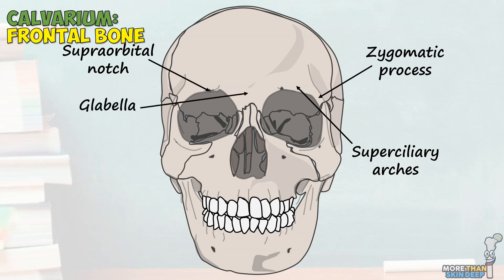This part of the frontal bone is known as the glabella, and the part where it joins the nasal bones is the nasion. The last thing to note of the frontal bone is that on its interior sit the paired frontal sinuses, which produce mucus that drains into the nasal cavity.